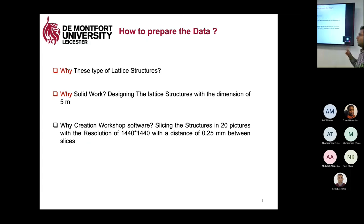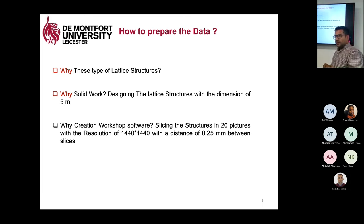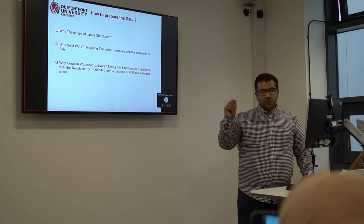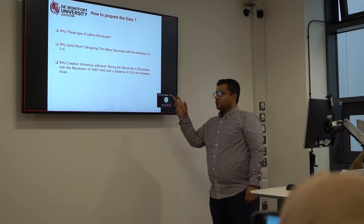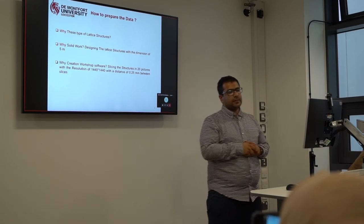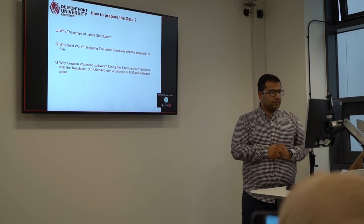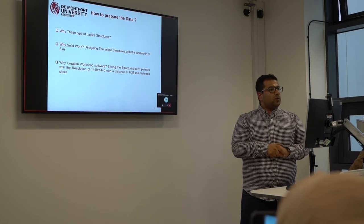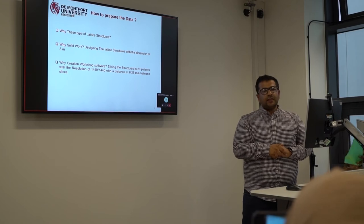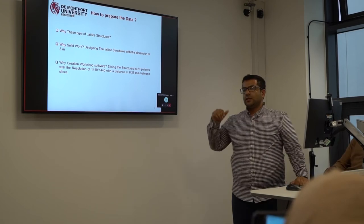As previously discussed, why this type of lattice structure? Porosity is one of the main goals — bone is a porous material. If we are able to predict porosity, then we may be able to do the same for bone. For designing the lattice, we used SOLIDWORKS, a well-known design software. The dimension of each lattice is 5 mm by 5 mm by 5 mm. We also used Creation Workshop as a slicer to slice each geometry.